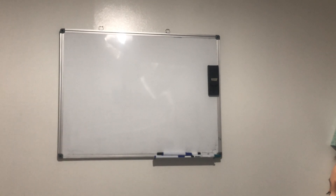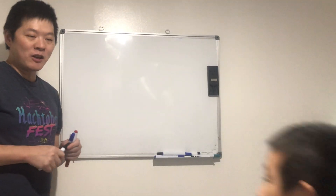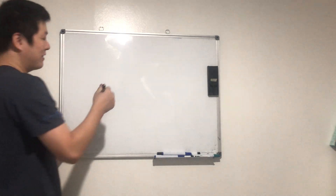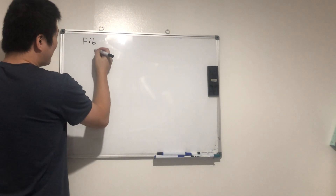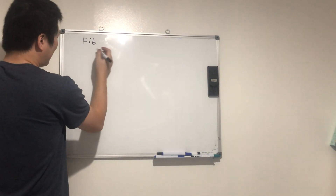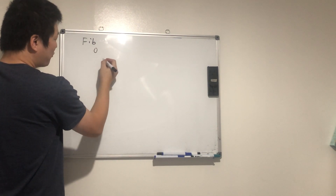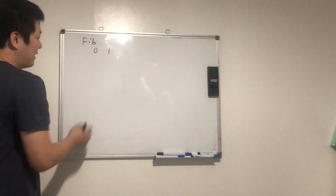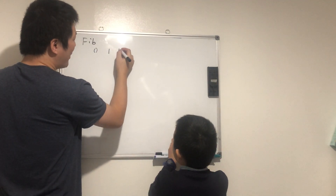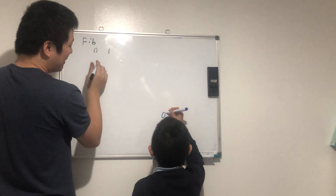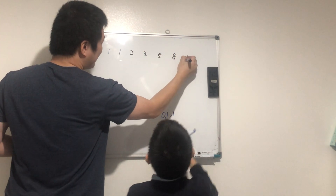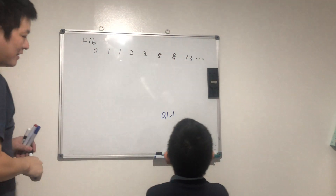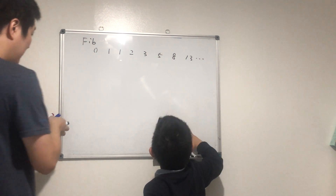Today we'll talk about the Fibonacci number. The Fibonacci number is a sequence — the first number is zero, the second number is one, and the next numbers are always equal to the sum of the previous two. So that's zero, one, one, two, three, five, eight, thirteen, and so on.